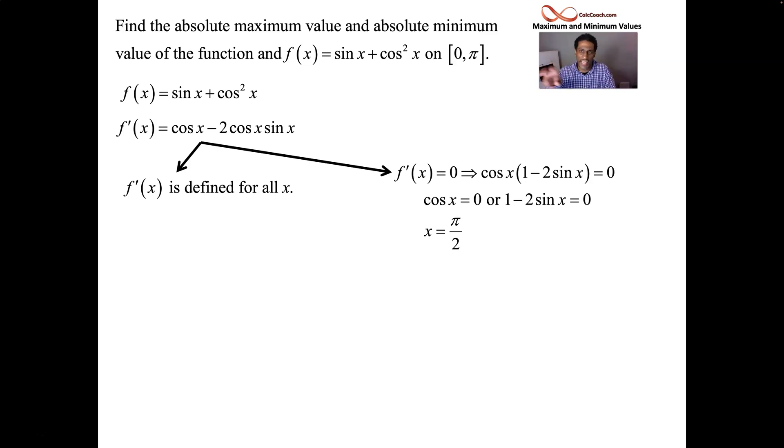cos(x) is equal to 0 right in the middle of that at π/2. In the other one there, we're talking about sin(x) being equal to a half, and that's going to happen twice. That's going to happen at 30 degrees π/6, also at 150 degrees 5π/6. All of these are in our interval.